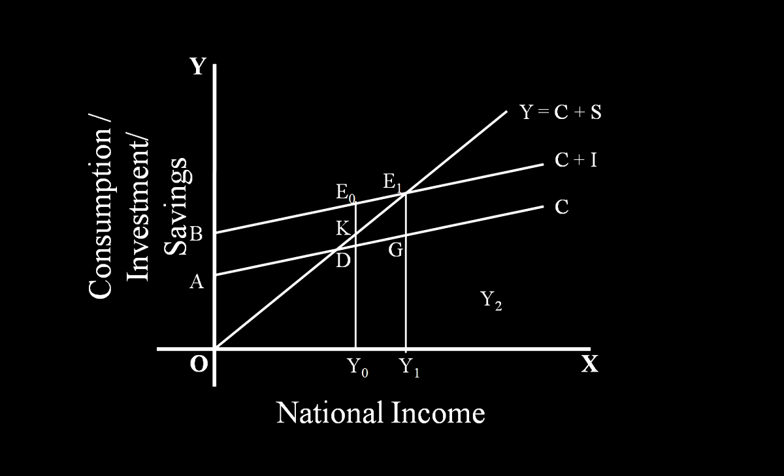Take income Y2. In this case, aggregate supply is Y2E2 and exceeds aggregate demand by JE2. The community wants to spend Y2J on consumption and save HE2.